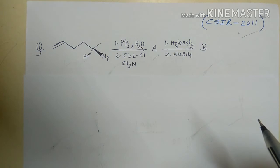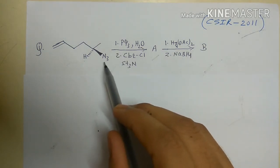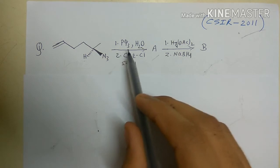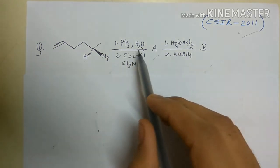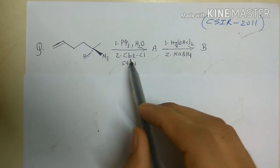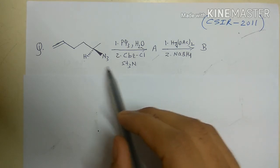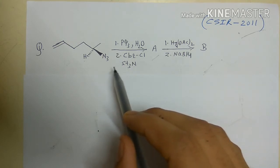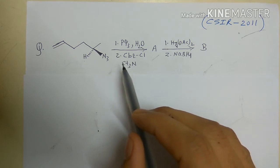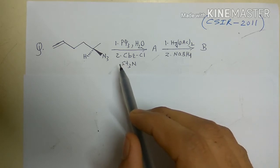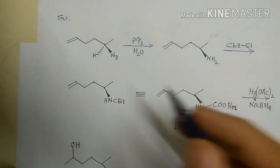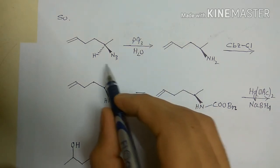In the first step, when the azide compound is treated with triphenylphosphine in the presence of water, this is called Staudinger reduction. The Staudinger reduction reduces the azide group to an amine group. I will not discuss the detailed mechanism here — you can find it in my other video by clicking the link above.